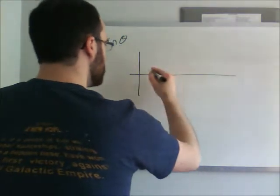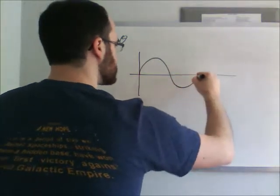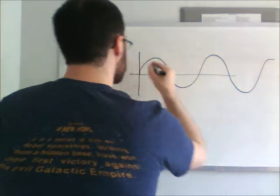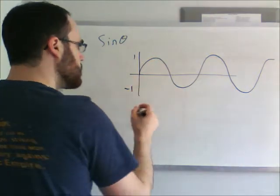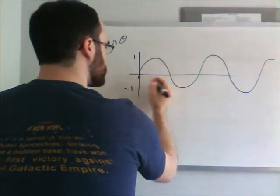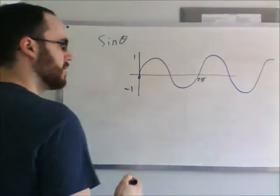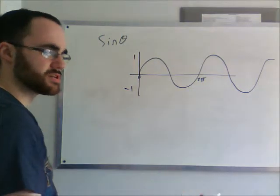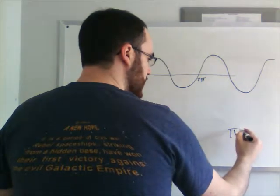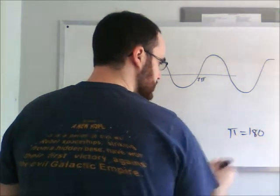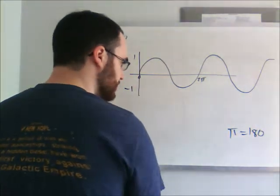Basically, sine theta is a graph that repeats like this forever, between 1 and negative 1, and between 0 degrees and 2π radians. Radians is just another way of saying degrees, where π radians equals 180 degrees. So 2π radians is 360 degrees.